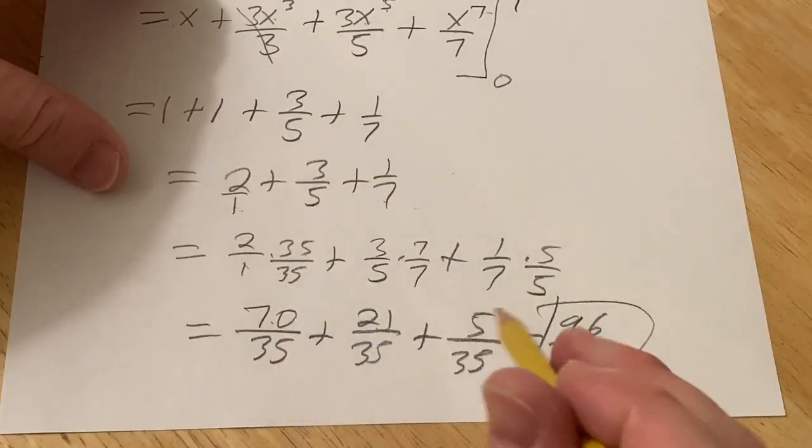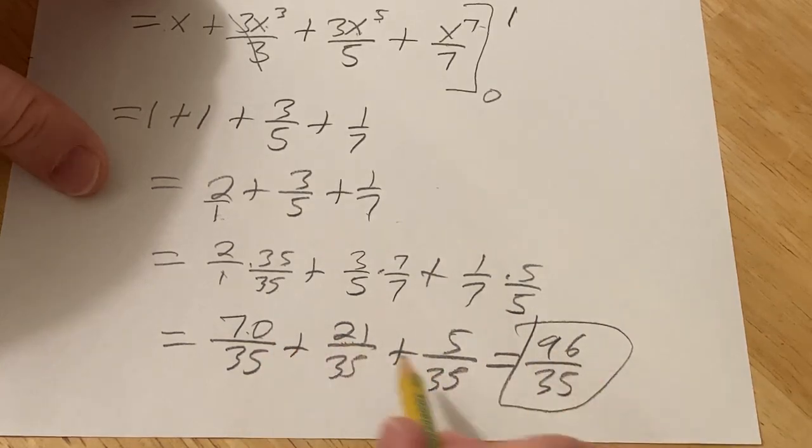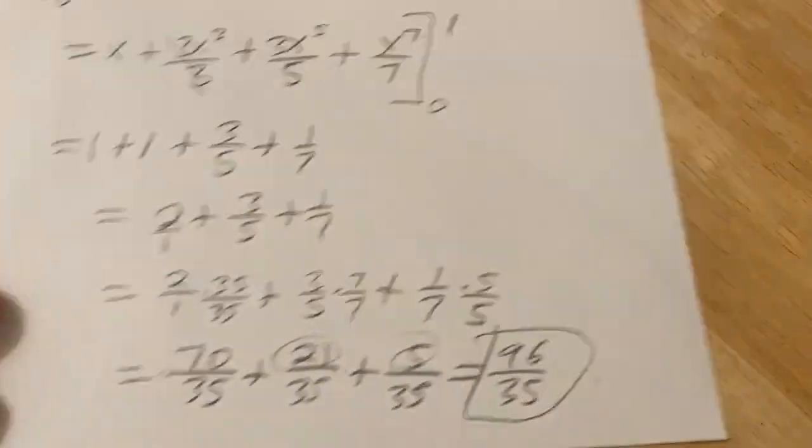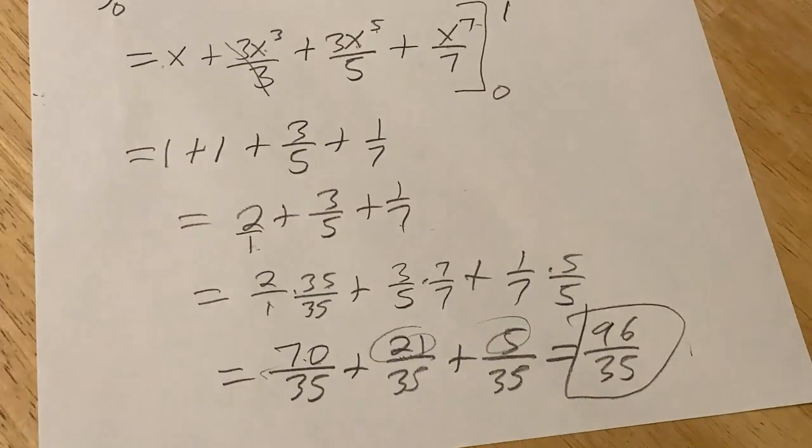Pretty nuts, right? So yeah, that would be it. Did I do that right? Yeah, I did that right. 21 plus 70 is 91, 91 plus 5 is 96. Make sure the addition is right. Easy to mess up if you don't have the calculator. I hope this video has been helpful. Good luck.